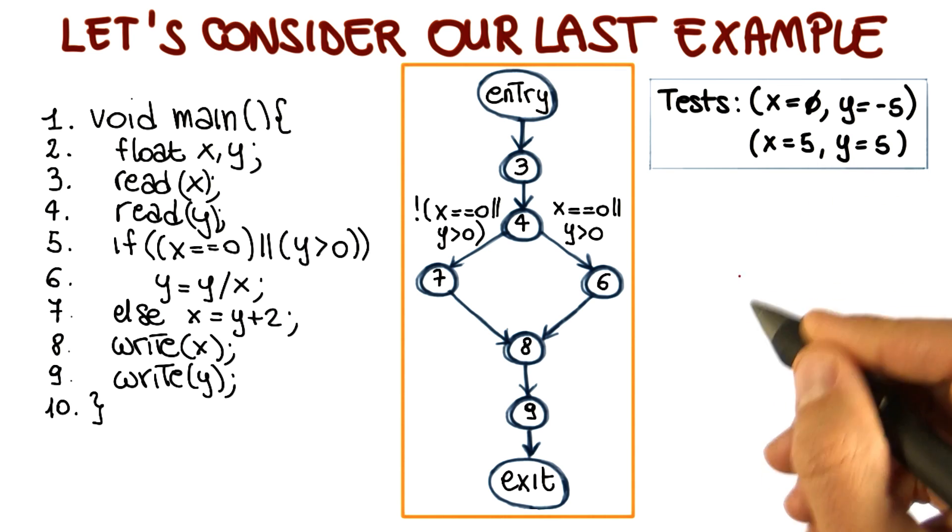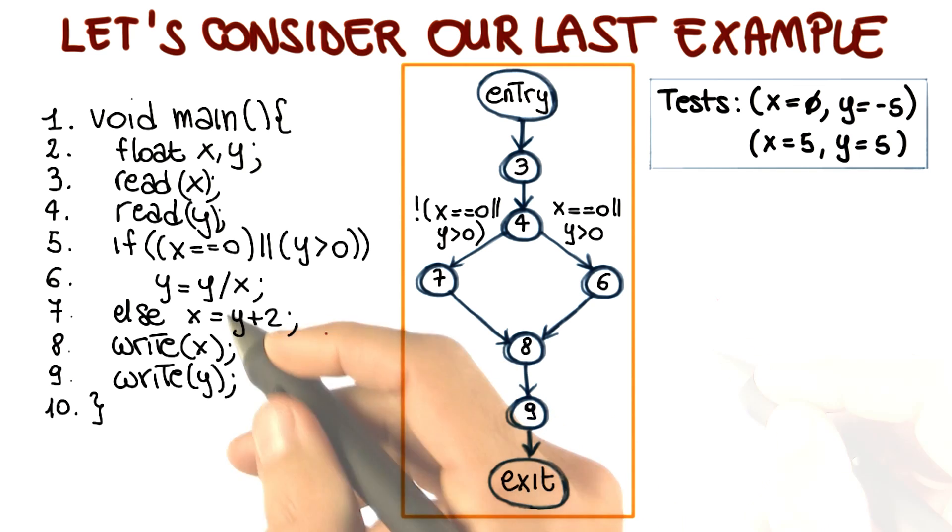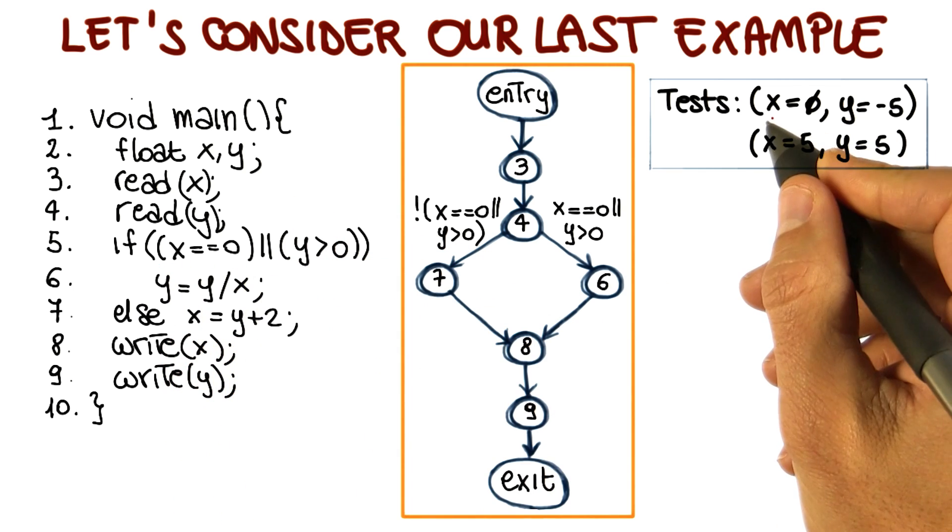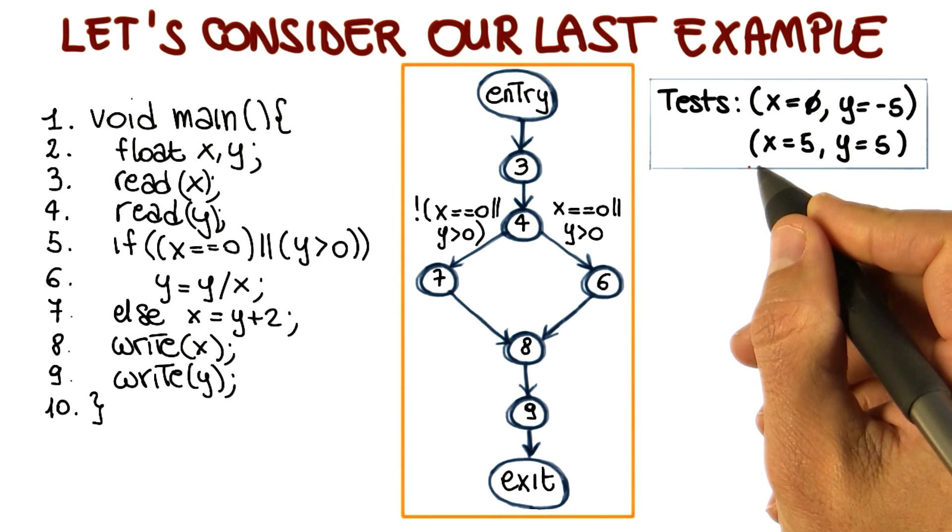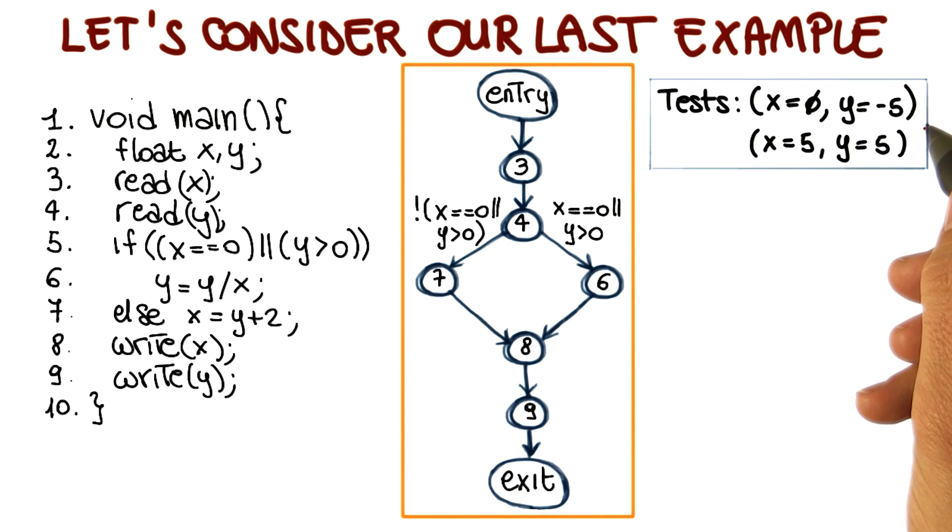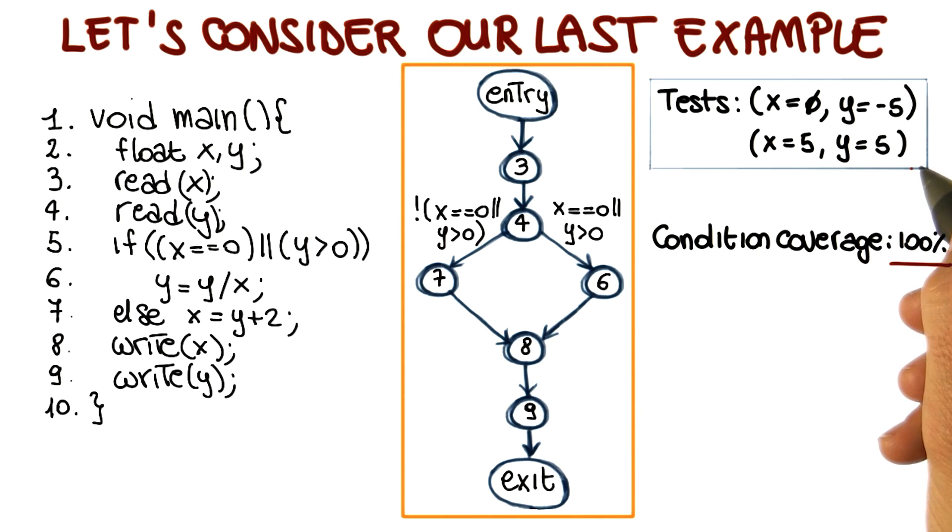Let's see what happens in terms of condition coverage when we run these tests. If we look at the first condition, x = 0, it is true for the first test case and false for the second one. As for the second condition, y > 0, it is false for the first test case and true for the second one. Therefore, we achieve 100% condition coverage with these two tests.